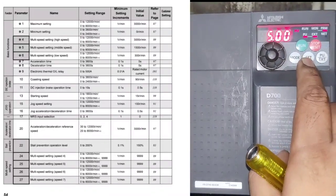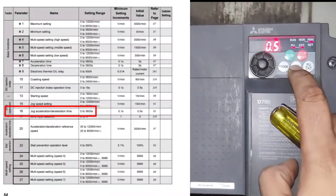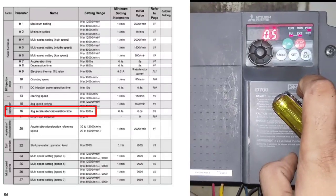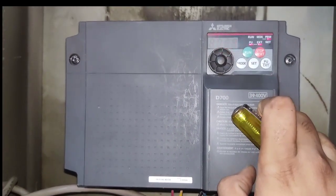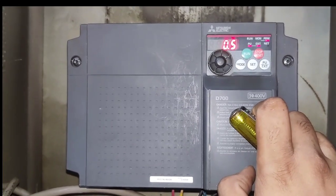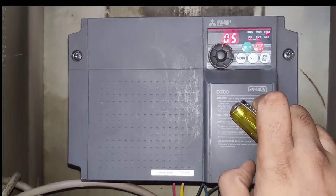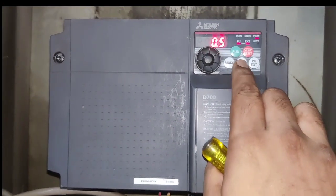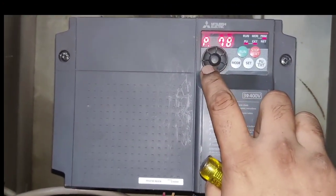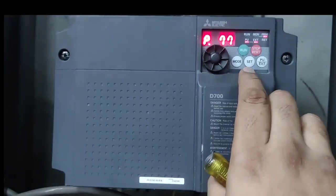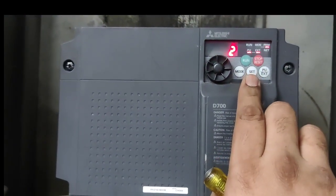Next parameter P16 is for jog acceleration and jog deceleration — that is ramp-up or ramp-down in jog application. For jog acceleration and jog deceleration we set 0.5 seconds.